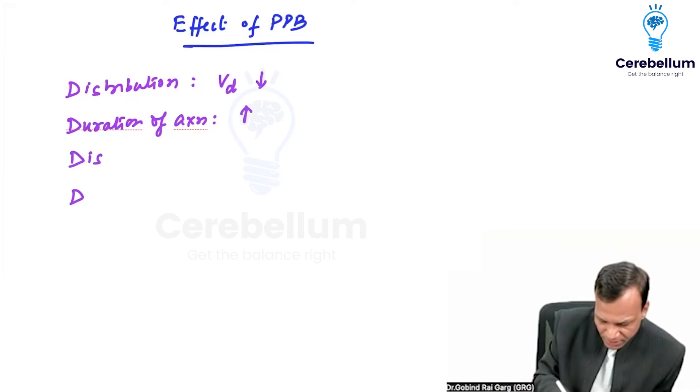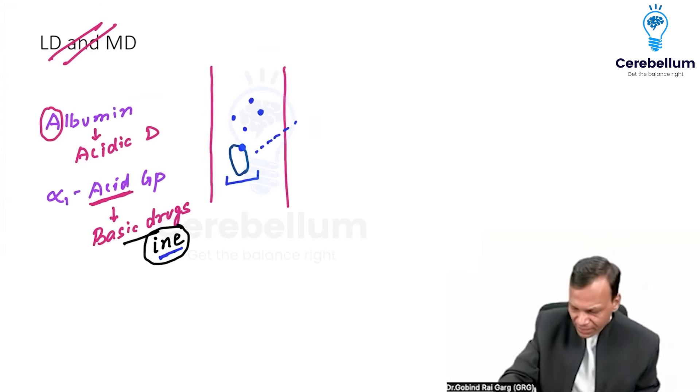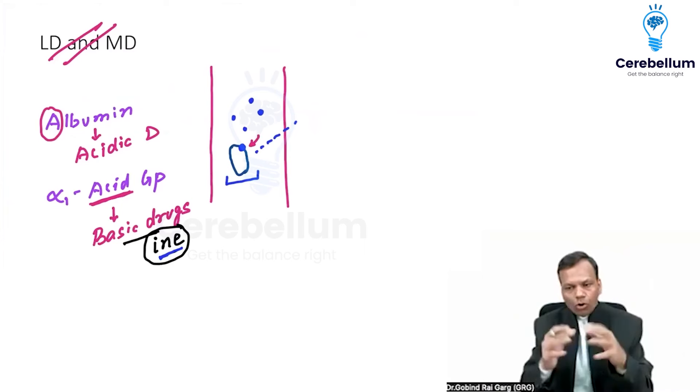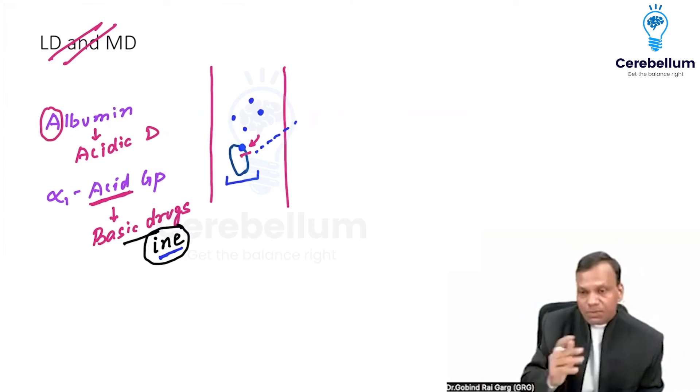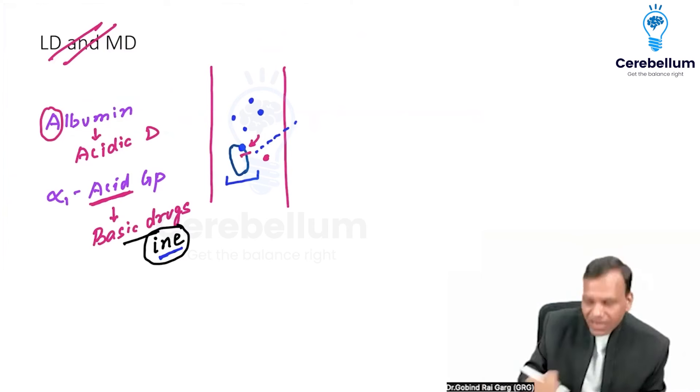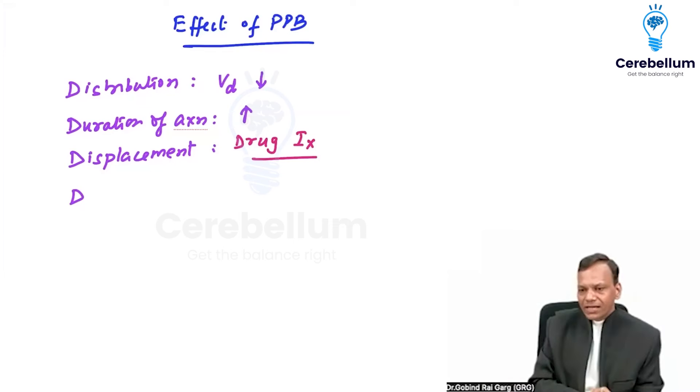Third is displacement. Displacement simply means if two drugs have high plasma protein binding and both are binding to the same protein, then there will be competition between the two. Whichever drug is displaced, only one can bind, both cannot bind. So whichever does not bind will become free and can become toxic. Displacement simply means there will be drug interactions. If a drug has high plasma protein binding, it is more prone to drug interactions.